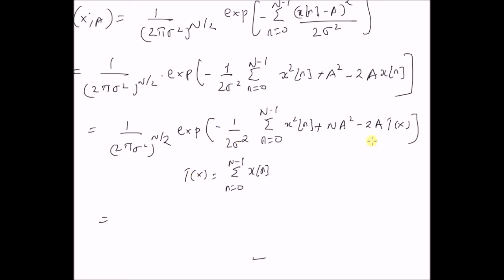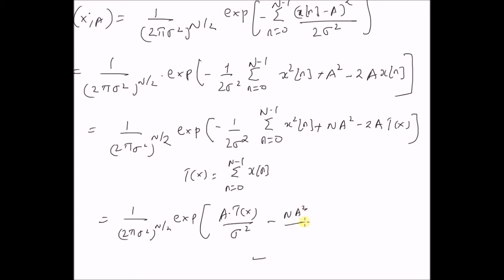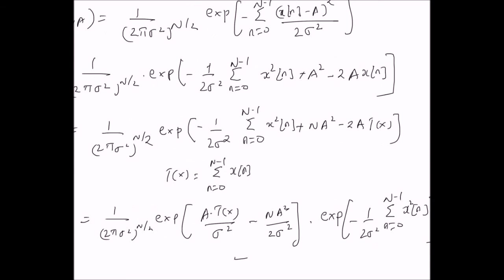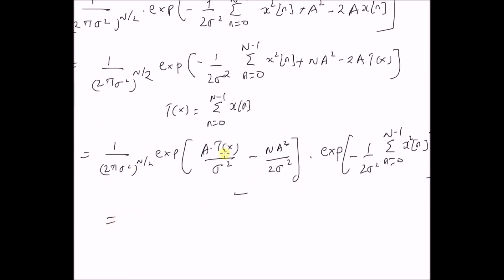We can clearly write the distribution as a product of two functions as follows: the first is 1 over (2 pi sigma squared) to the power N/2 times the exponential of a times T(x) over sigma squared minus N times a squared over 2 sigma squared; and the second function is the exponential of minus 1 over 2 sigma squared times the sum from n equal to 0 to N minus 1 of x squared(n). Clearly, the first function is g(T(x); a) and the second is h(x).